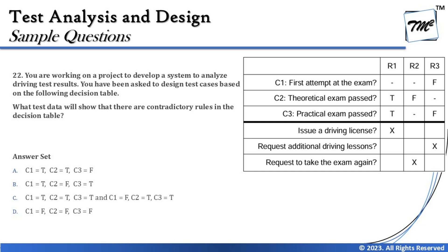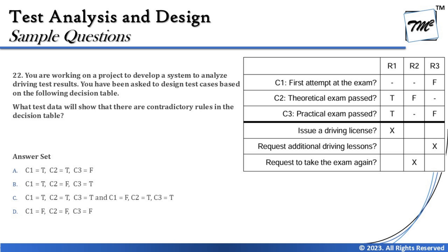Option B says True, False, True. Looking at the table, this is only possible in R2, where the middle value (C2) is false. Placing True, False, True into R2 shows no contradiction — comparing R2 and R3, C1 and C3 are false in R3, so R2 would be true and true for C1 and C3. There's no duplicate with any existing rule, so option B creates no contradiction and can be ruled out.